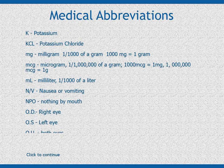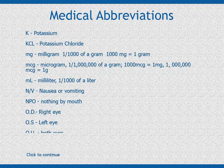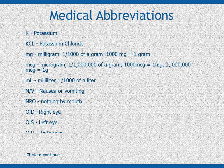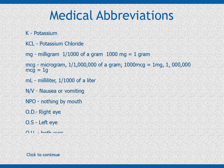K. — Potassium. K.C.L. — Potassium chloride. M.G. — Milligram; one one-thousandth of a gram. One thousand milligrams equals one gram. M.C.G. — Microgram; one one-millionth of a gram. One thousand micrograms equals one milligram; one million micrograms equals one gram. M.L. — Milliliter; one one-thousandth of a liter. N.V. — Nausea or vomiting.